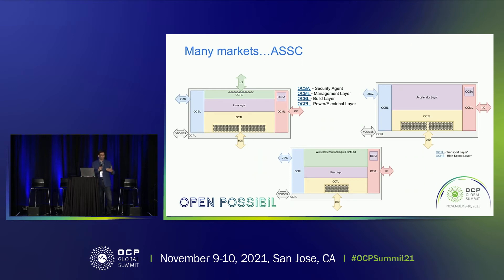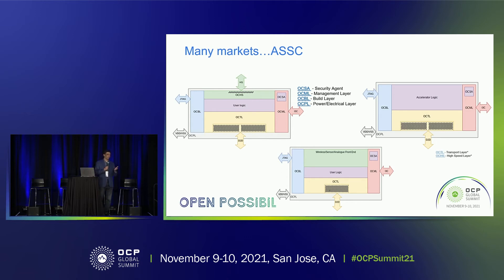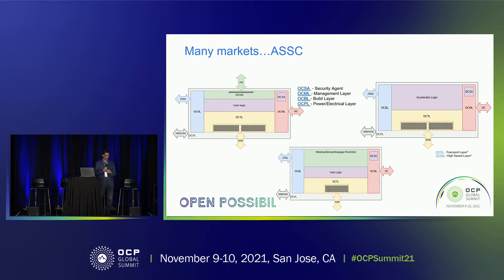Let me talk about the layers. There is OCML — the Open Chiplet Management Layer — which handles manageability. Embedded in the management layer is a security agent, because security is super important. We have a build layer, which covers how you build a chiplet: resets, clocks, and DFT. We have a power and electrical layer which mitigates challenges of physical footprint compatibility. We also have two informative layers — the high-speed layer and the transport layer — which cover die-to-die interconnects, where a lot of work is already being done in ODSA and other places.